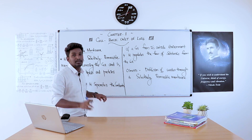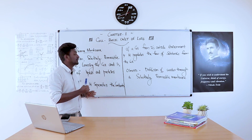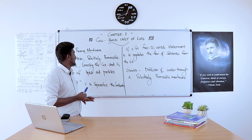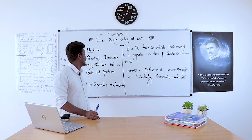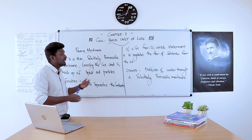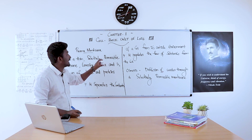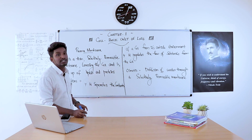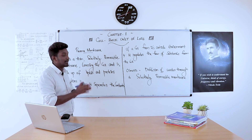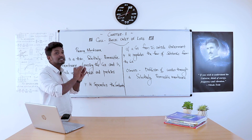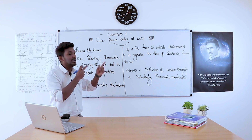For the plasma membrane, remember three points: it is a selectively permeable membrane, it is the covering of the cell, and it is made up of lipids and proteins. The first function of the plasma membrane is that it separates the contents of a cell from its outside environment.